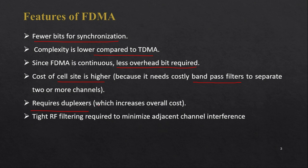FDMA requires tight RF filtering to minimize adjacent channel interference, because users on adjacent channel frequencies may be at nearby locations. Careful filtering is therefore necessary to handle adjacent channel interference.